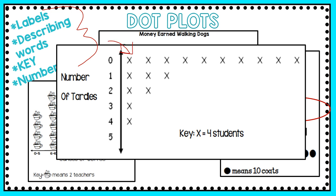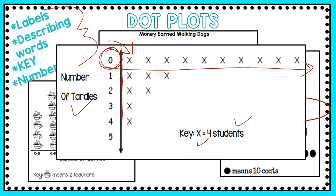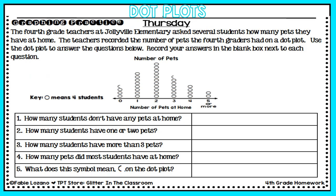One more example: here the dots are X's and you have a number line moving up and down, with zero moving across horizontally. This one is about tardies, and the key tells me that every X represents four students. So the number of students with zero tardies are in that row. These are just some examples of dot plots you might encounter — now let's answer some questions using a dot plot.